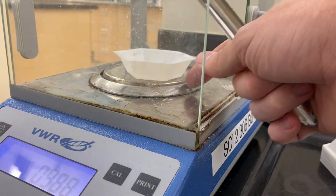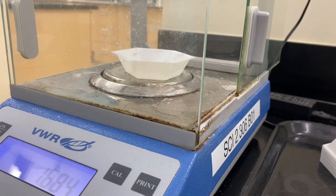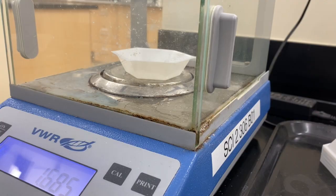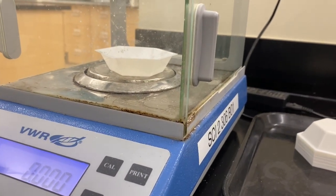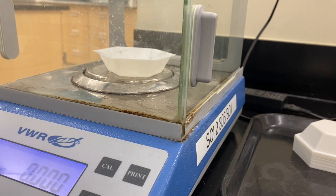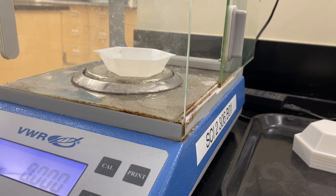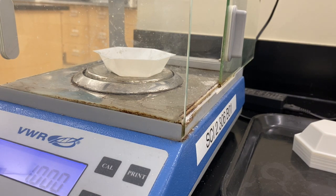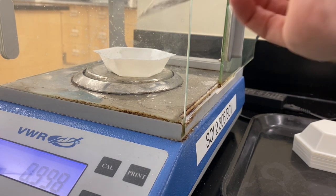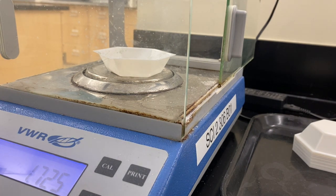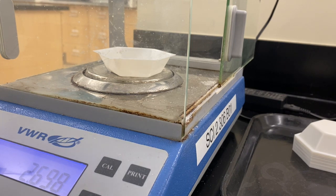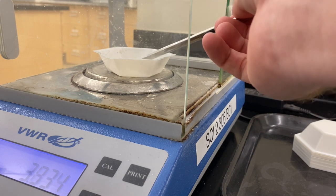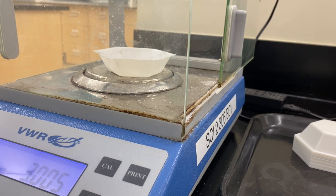We're going to add our weigh boat. We need to make sure we aren't weighing the weigh boat as well as our stuff, so we need to tare it. Hit the little T button right here and that will zero the mass. Now we're going to weigh out three grams of material. I think that's pretty good, so we're at 3.005.